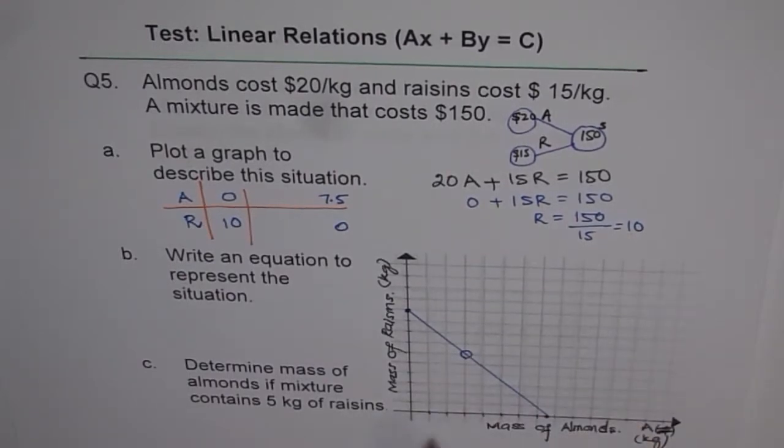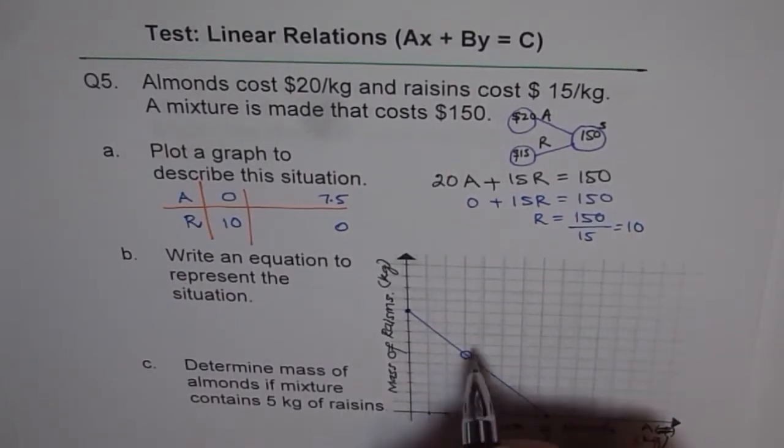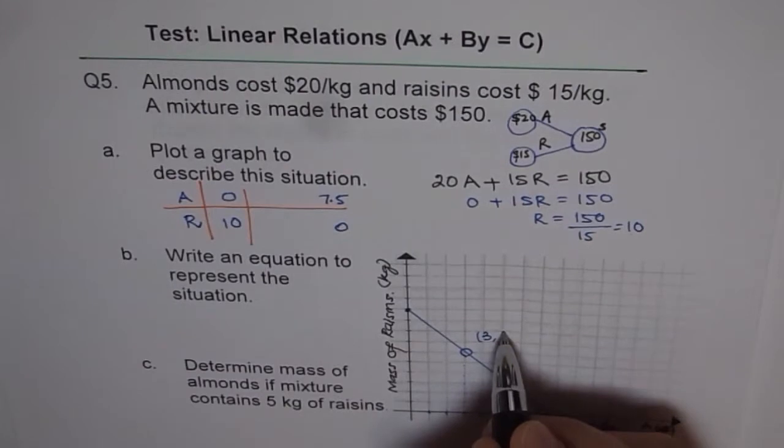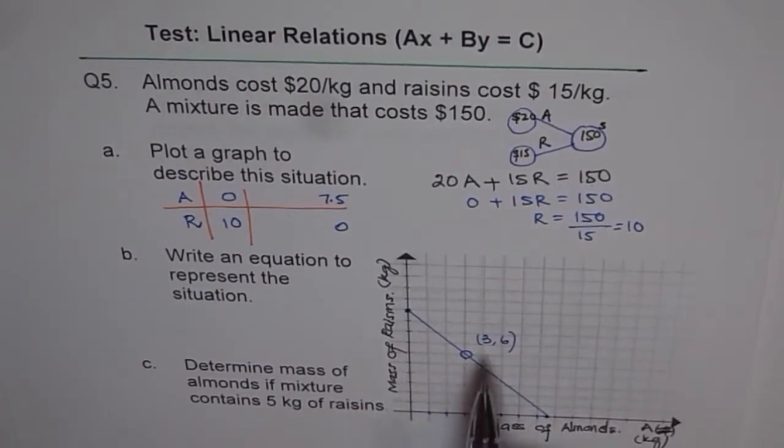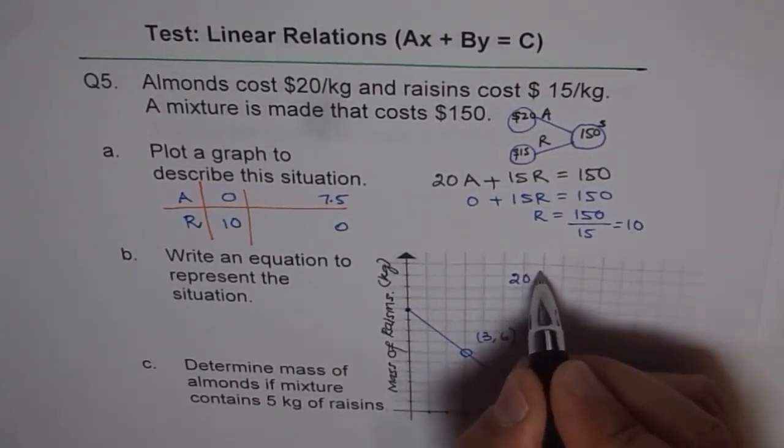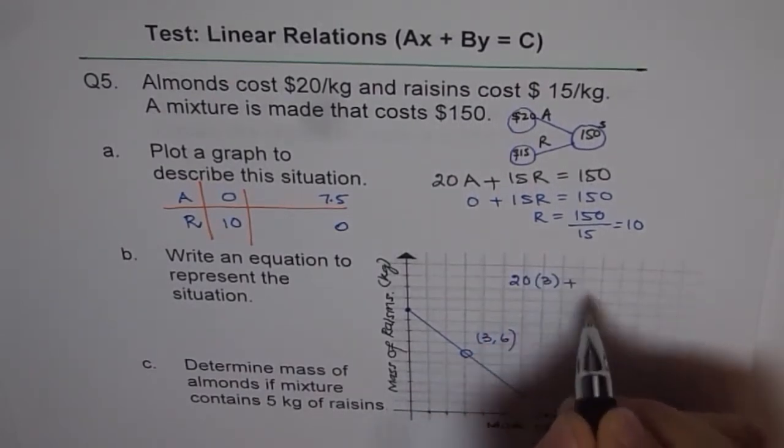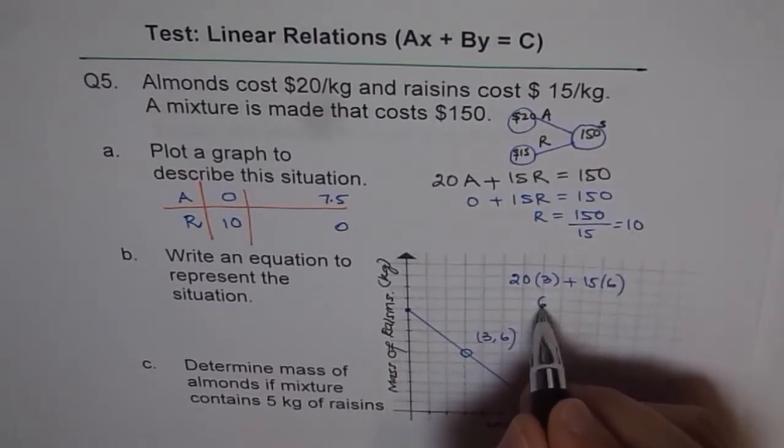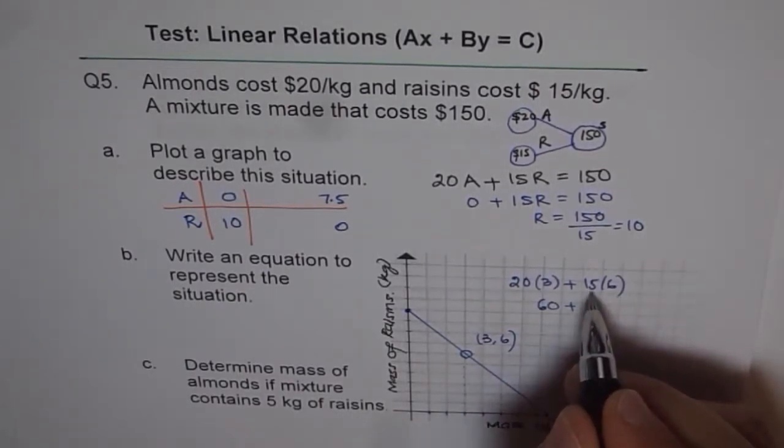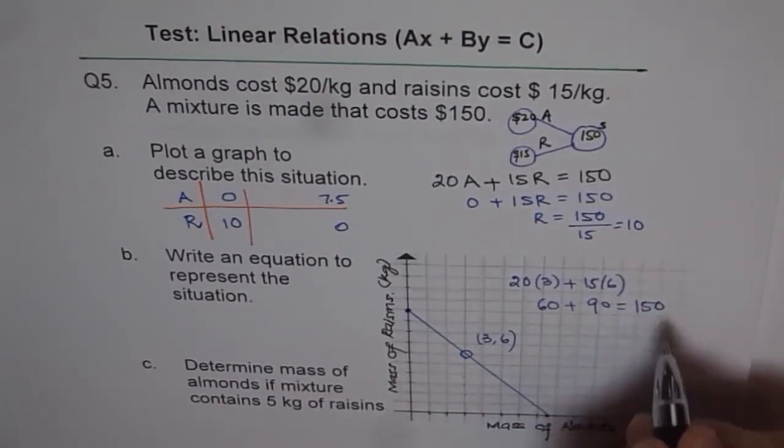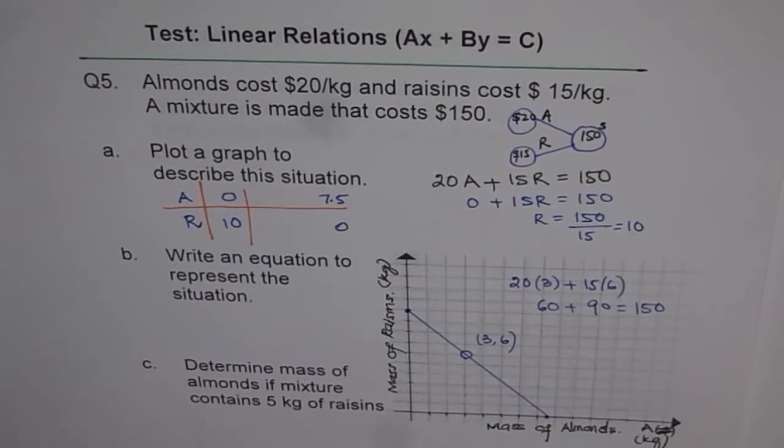Now at this point, almonds are 1, 2, 3. Let me write 3 almonds. And raisins are 1, 2, 3, 4, 5, 6. Now if I plug in 3 for A, what do I get? I get 20 times 3 plus 15 times 6. Now 20 times 3 is 60, and 15 times 6 is 90. And when you add that up, you get 150. That is the dollar amount.